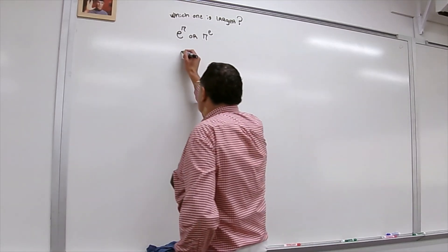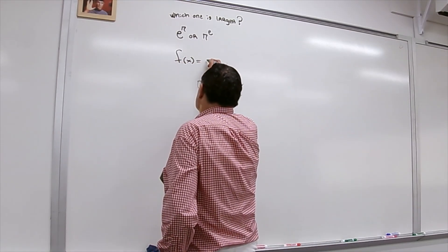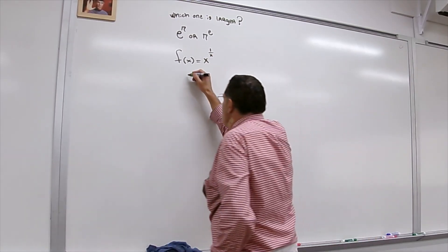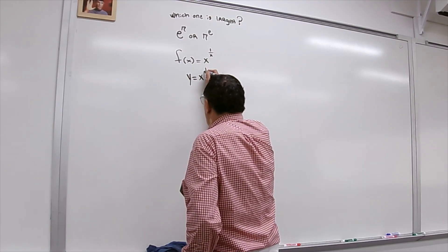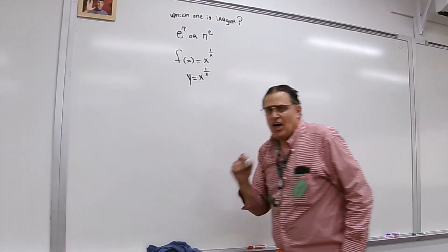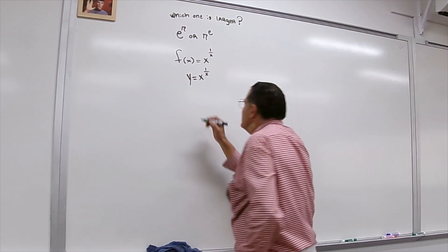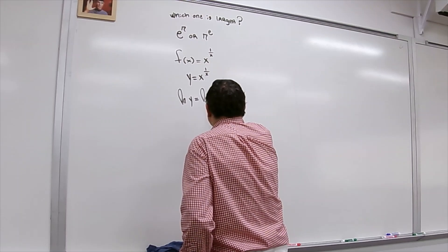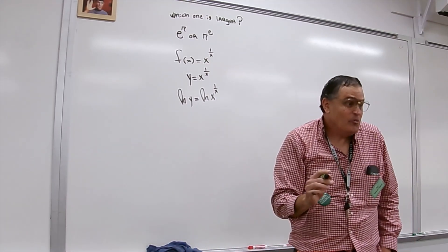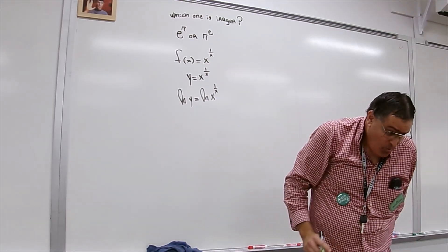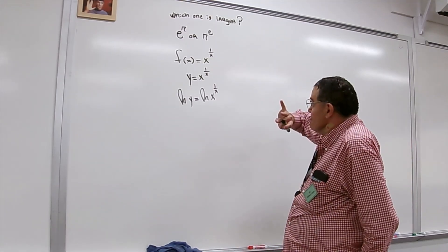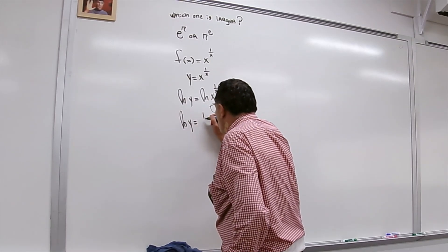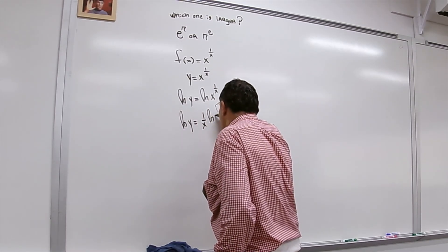So consider this function f of x equals x to the 1 over x. I'm going to go ahead and write that as y equals x to the 1 over x. I'm going to natural log both sides. I love the natural log. Natural log gives me that. Using the power rule of logs I'm going to go ahead and write this as ln y equals 1 over x ln x.